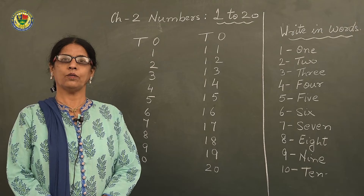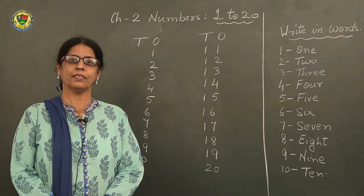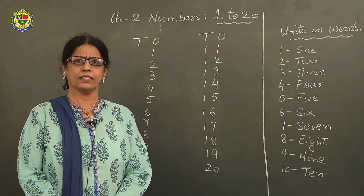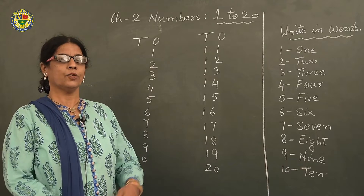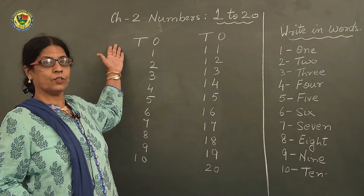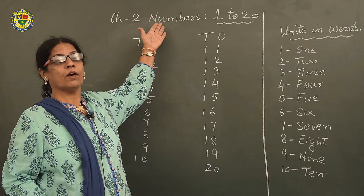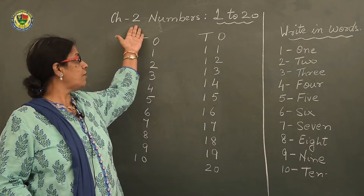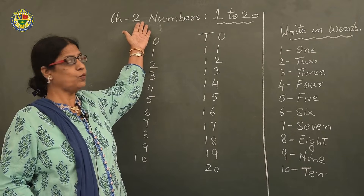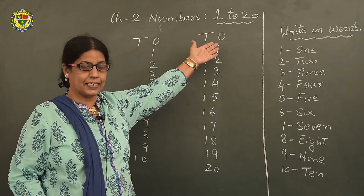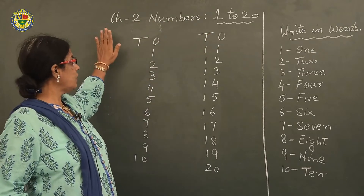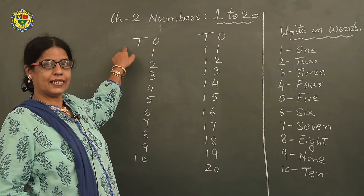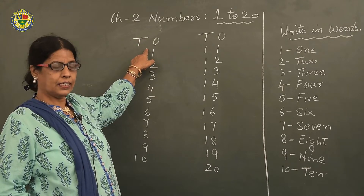So how will you know how to write numbers? You have already learnt in senior kg. But then you will write in this way. On the first new page of your notebook, lesson 2, numbers 1 to 20. And then you will write like this — 10s and 1s. In one square you will write T, in one square you will write O.